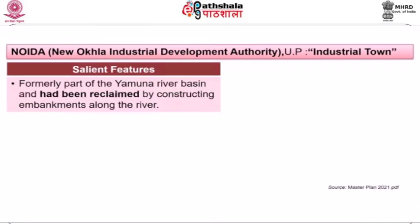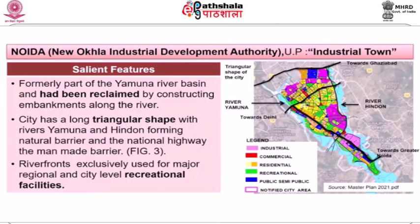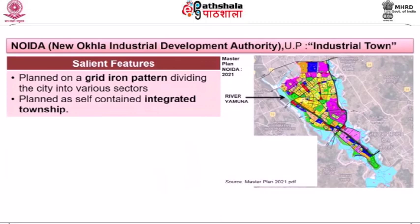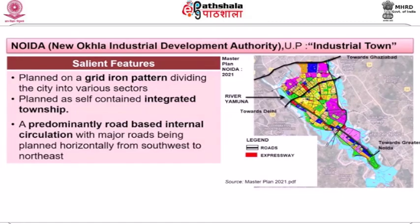This township was formerly part of the Yamuna river basin and had been reclaimed by constructing embankments along the river. The city is triangular in shape; the rivers Yamuna and Hindan formed natural barriers, and the national highway formed the man-made barrier. Riverfronts have been used exclusively for major regional and city-level recreation facilities, and the city is planned on a gridiron pattern dividing it into various sectors as a self-contained integrated township.